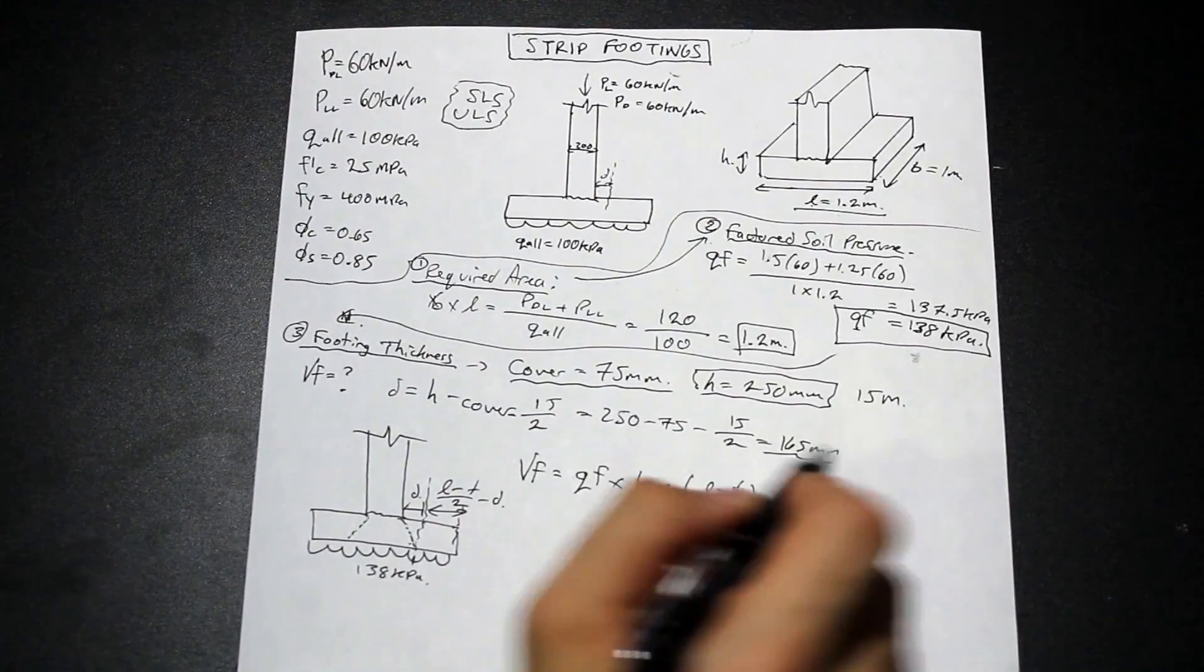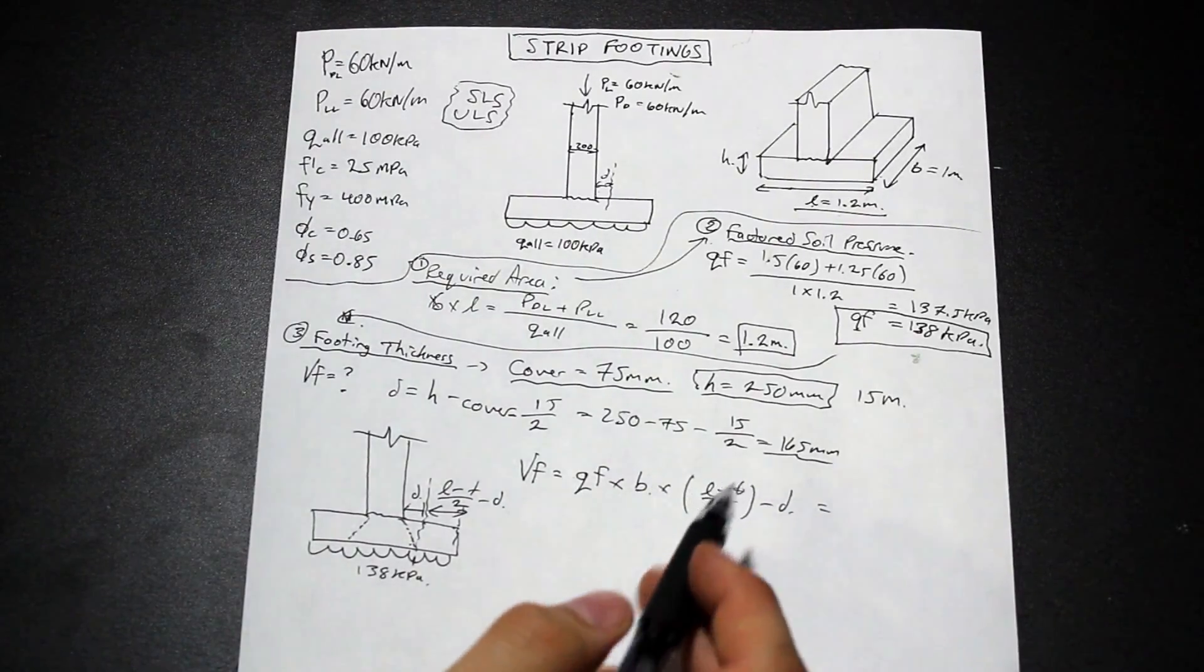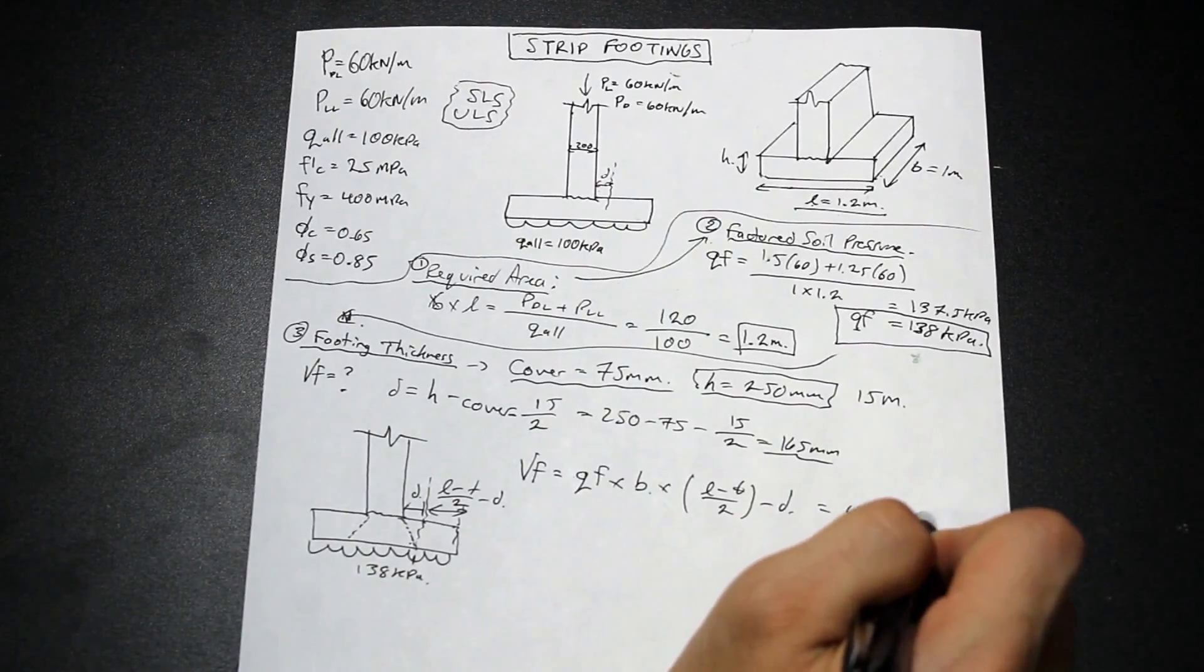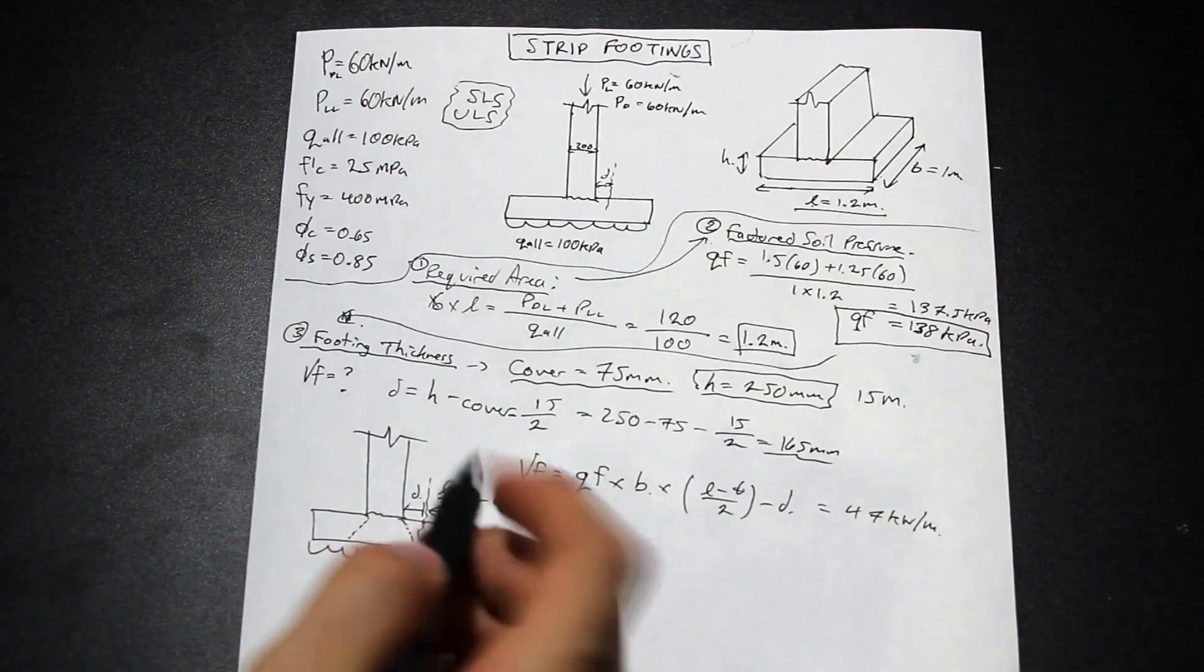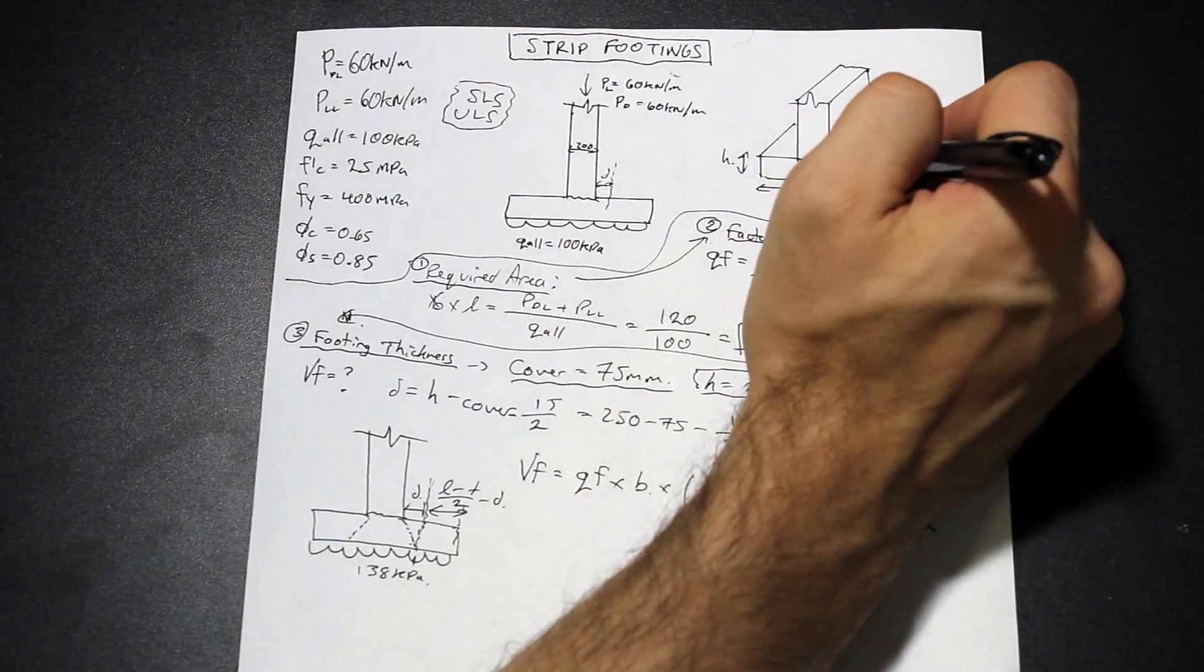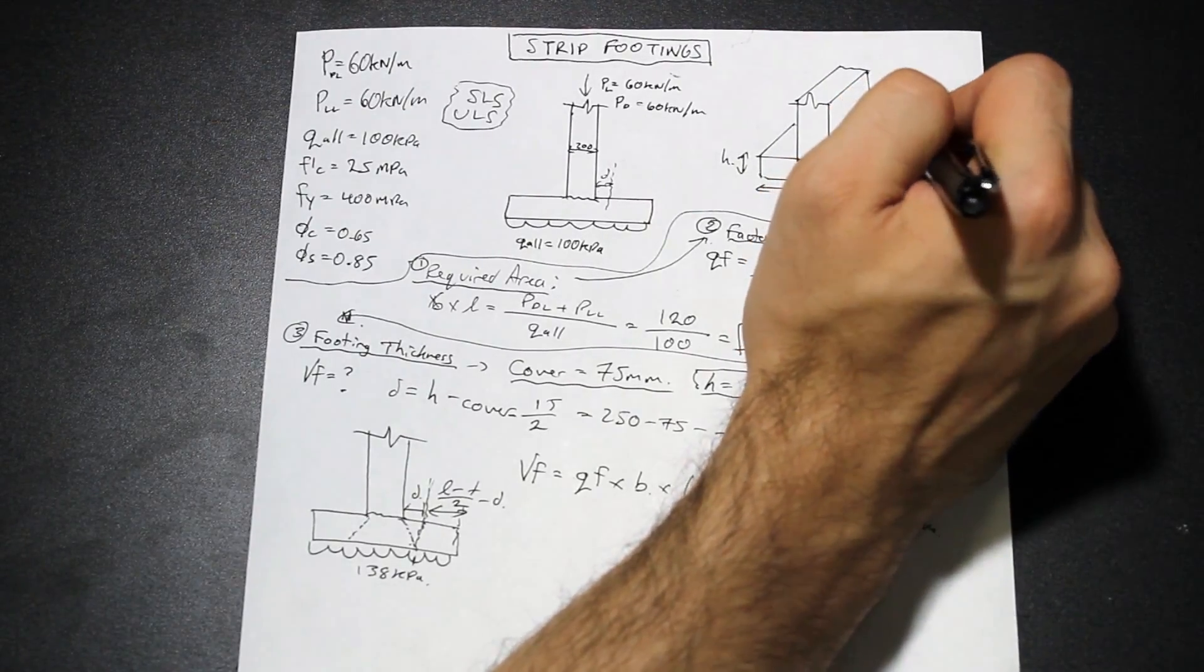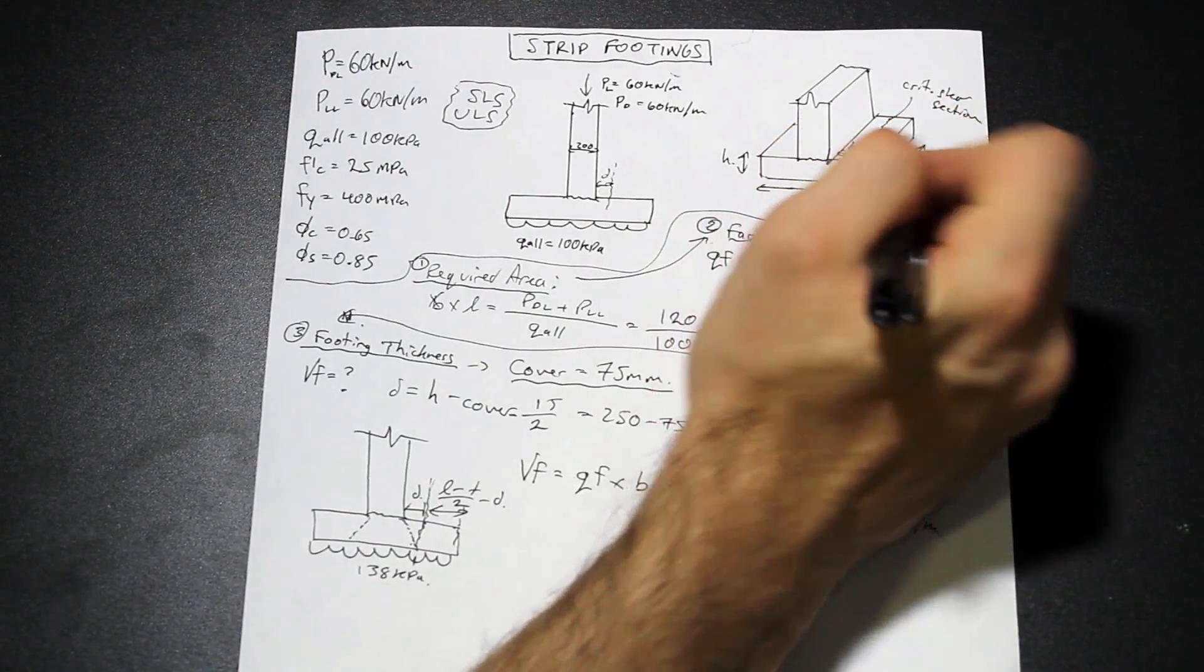And we're going to multiply by this distance here. So L minus T over 2 minus D. And if we plug everything in, we plug in QF, we have everything L, T, D, B. That's going to give us a factored shear force of 47 kilonewton per meter. So that is the factored shear force at this critical section here all the way down the strip footing. So we have this critical shear section here. And that is at a distance D from the face of the column.